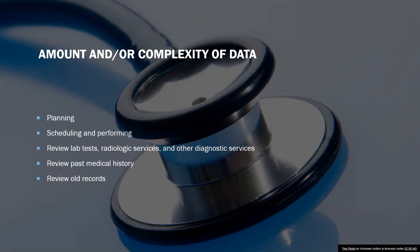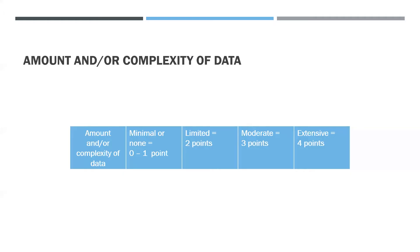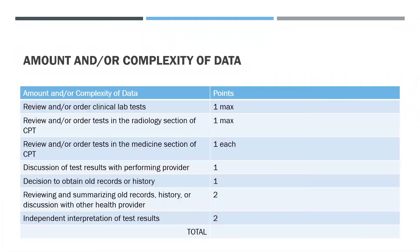When thinking about the amount or complexity of data, consider what the provider is doing or thinking during the encounter. The provider may be planning and scheduling tests, reviewing lab tests, radiological services, and other diagnostic services, reviewing past medical history, or reviewing old records. The amount and/or complexity of data to be reviewed is a measure of the need to order or review tests, or the need to gather and review data regarding the patient's condition.